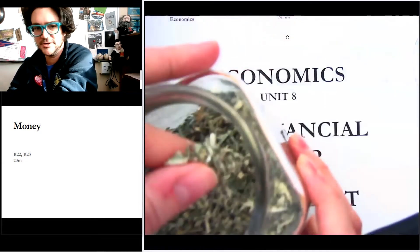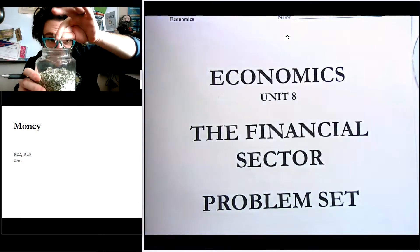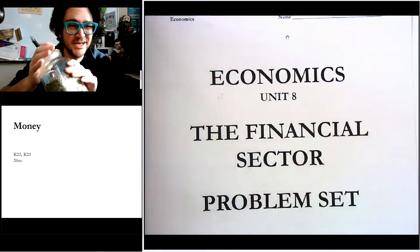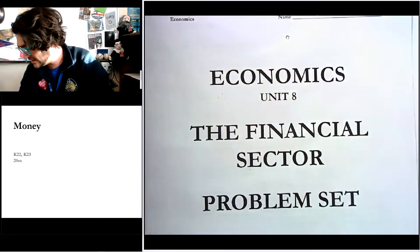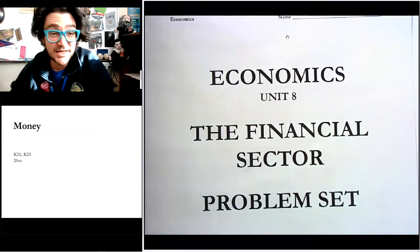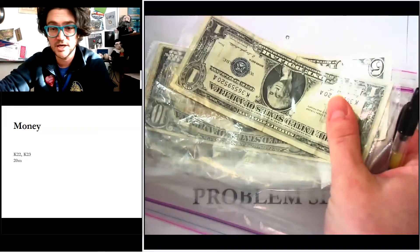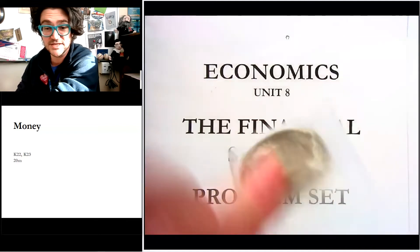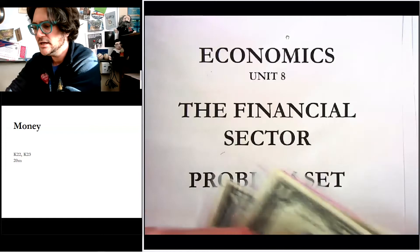This is a giant jar of shredded up money — that's where it used to be money before the Federal Reserve said it's worn out and we don't want this anymore. I have some other money to show you as well. We've got some paper money and then we've got some commodity money — it's actually a chunk of silver that we use as money.